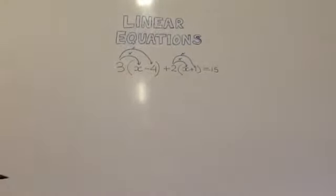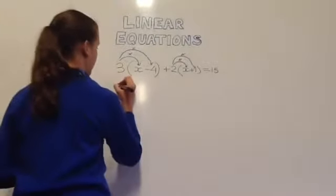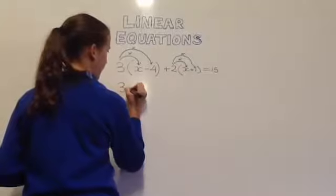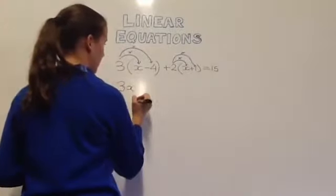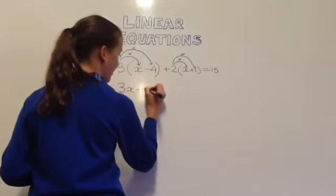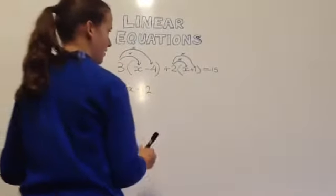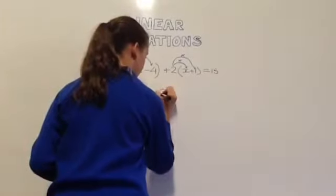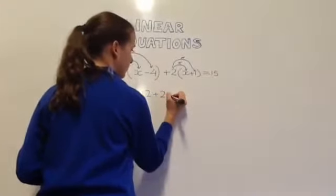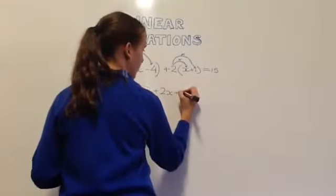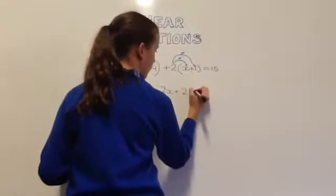First of all 3 times x equals 3x, then 3 times negative 4 equals negative 12. Then positive 2 times x equals positive 2x and positive 2 times positive 1 equals positive 2 and this equals 15.